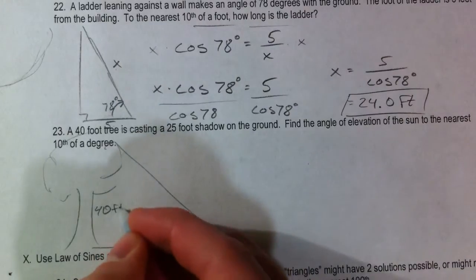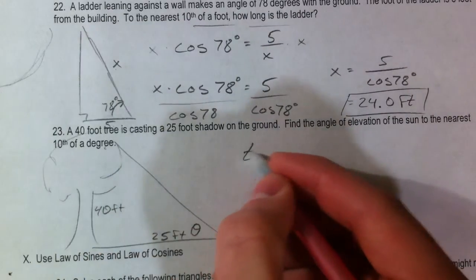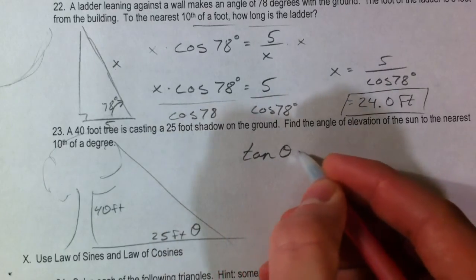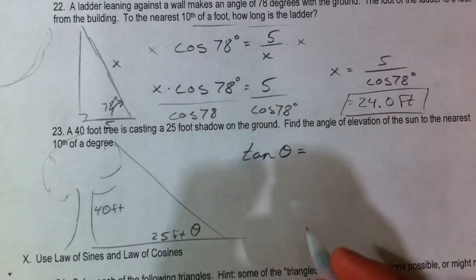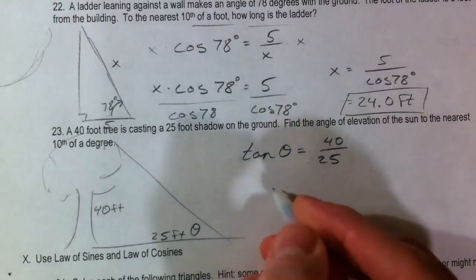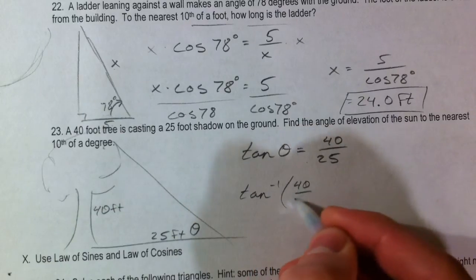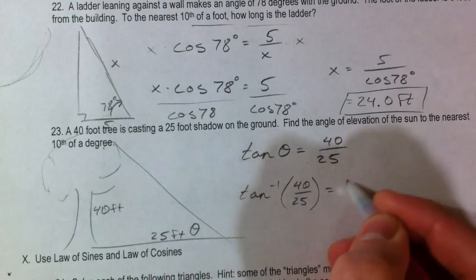So we've got 40 feet and 25 feet, we've got opposite and adjacent, so the tangent of the angle that we don't know, that's what we're trying to solve for, is 40 over 25. And so inverse tangent of 40 over 25 is equal to our angle.